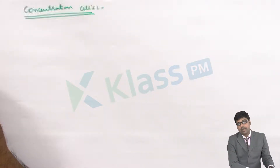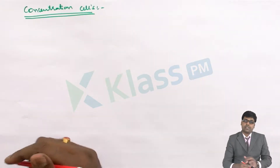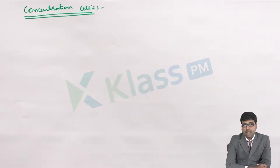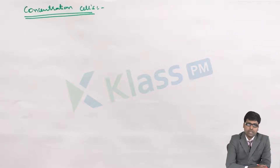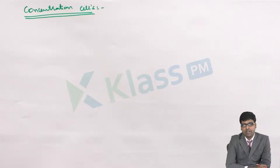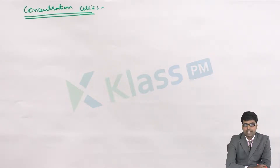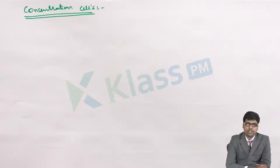Now, concentration cells. Till now we have seen the electrochemical cell where two different metals are placed in two different half cells connected through the external circuit, and because of the difference in their electrode potentials a potential difference develops and electrons travel from zinc to copper. But in concentration cells, the two electrodes are the same, and there is a difference in the concentration of the electrode or the electrolyte.